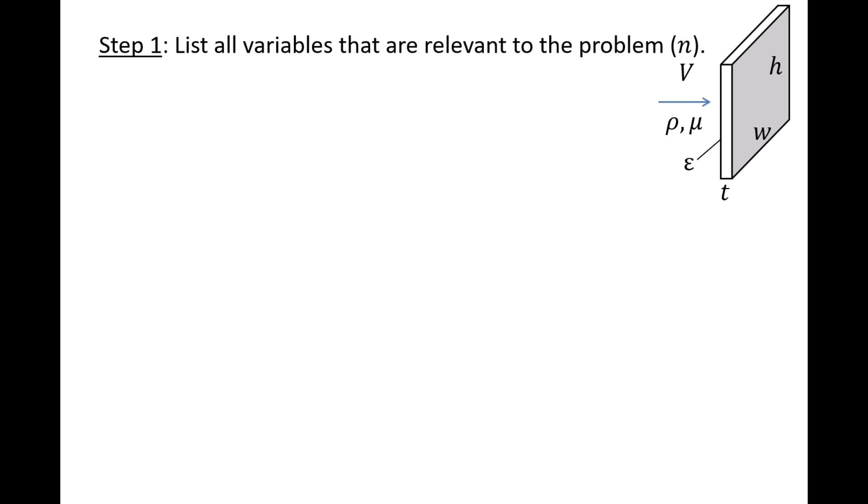Absolute viscosity mu is important because it requires more effort to deform higher viscosity fluids. For example, it takes more effort to move your hand through honey, which has a high viscosity, compared to water, which has a low viscosity.